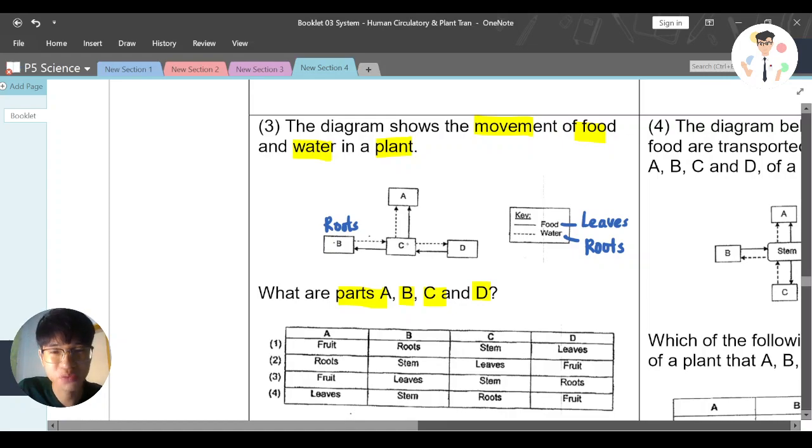C, as you can see, receive water and receive food and give up also. How about D? D, receive water but does not receive food. But on the other hand, it gives up food.